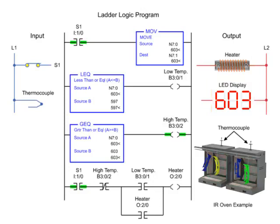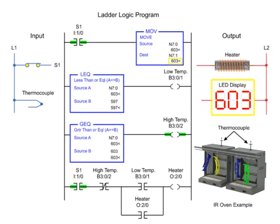To control the circuit, S1 is programmed in the heater output circuit. Addressed to the move instructions is a thermocouple that provides an analog value of the temperature. The temperature is moved from the source to the destination when S1 is activated and is displayed on the LED panel.